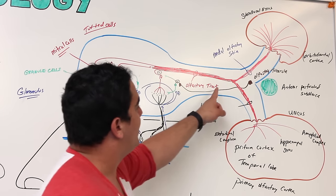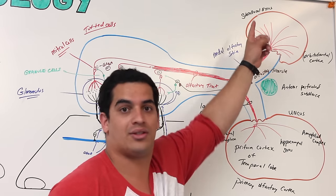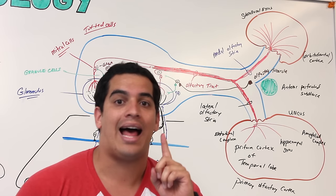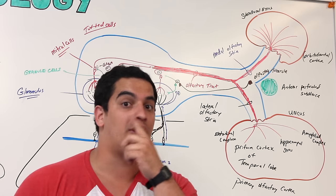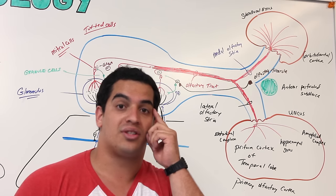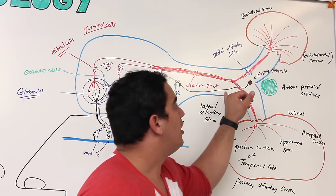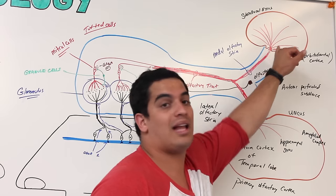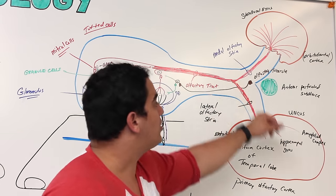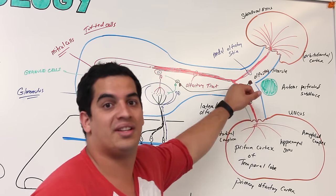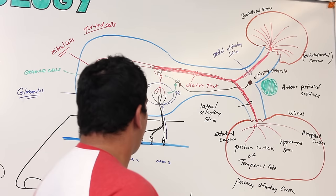One more important thing is that some of these fibers can cross to the other side, so smell can be bilateral. If you clog one side, you can still pick up some smell from the other side. Small amounts of fibers can actually be contralateral — crossing to the other cerebral hemisphere — whereas most of the fibers are ipsilateral, going to the same side.